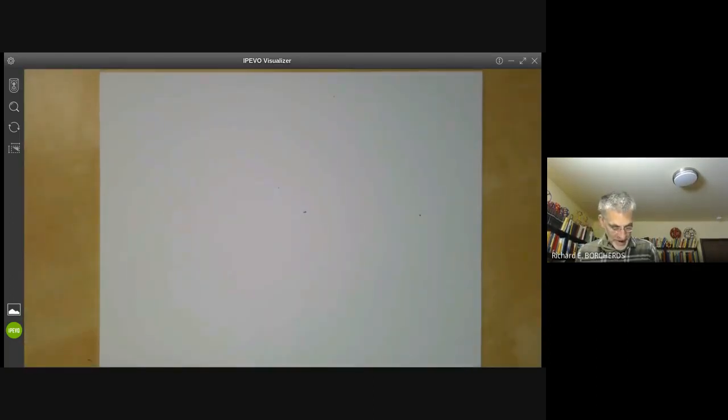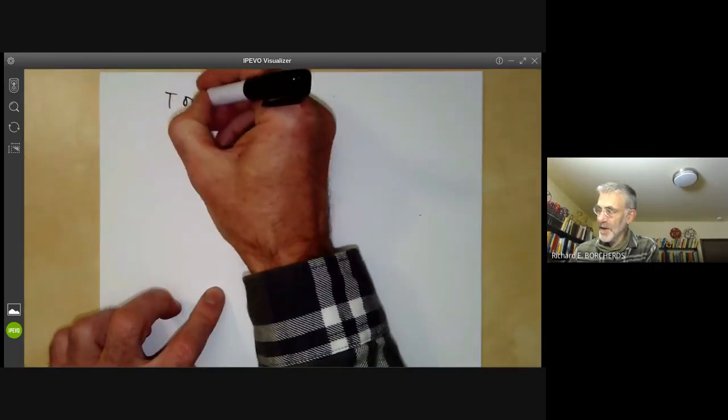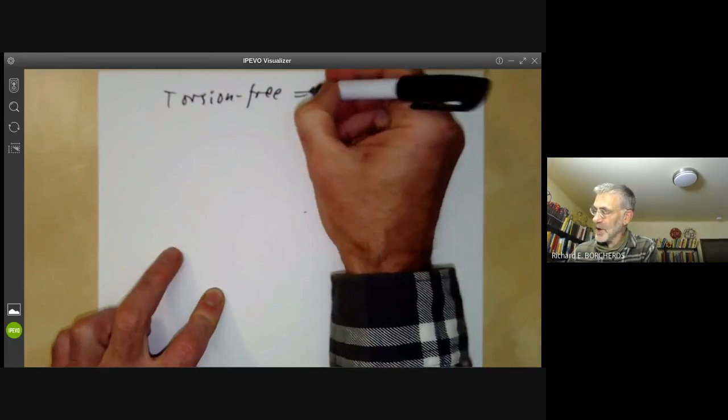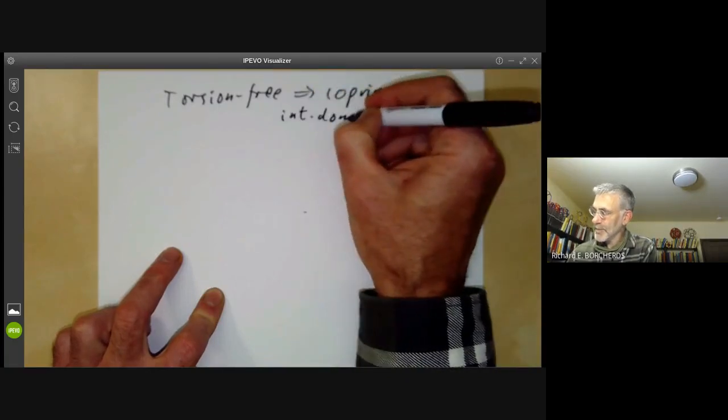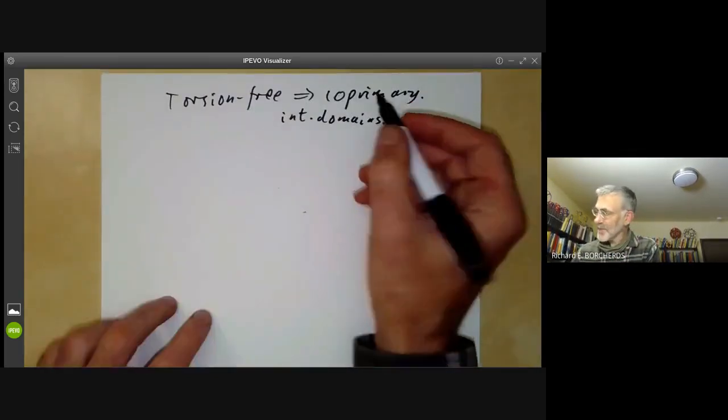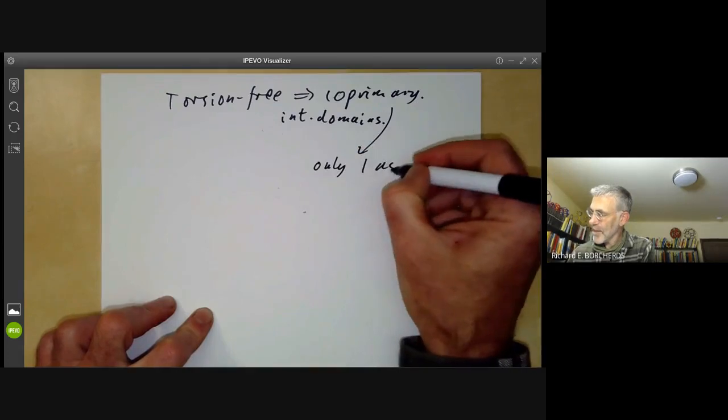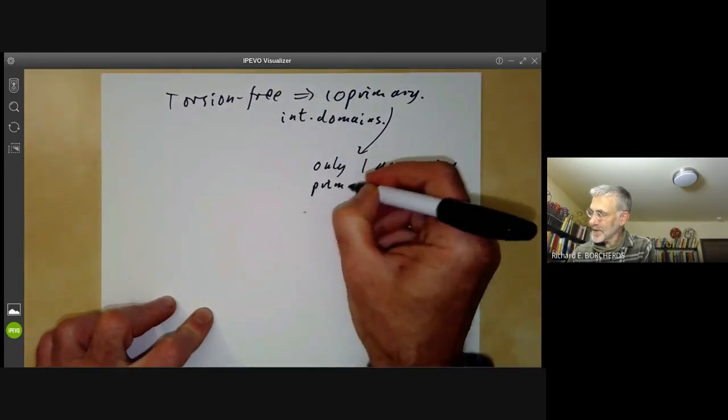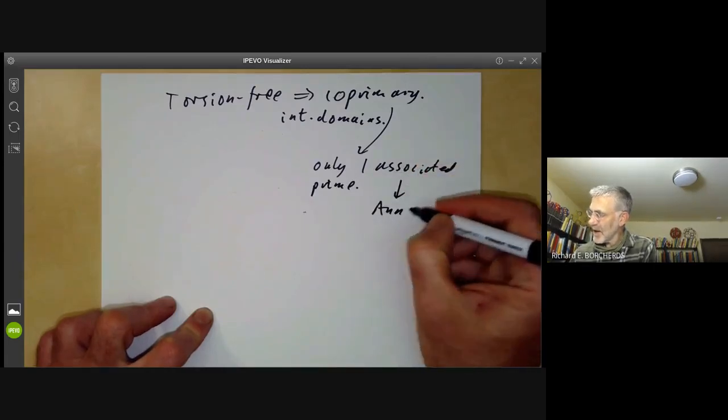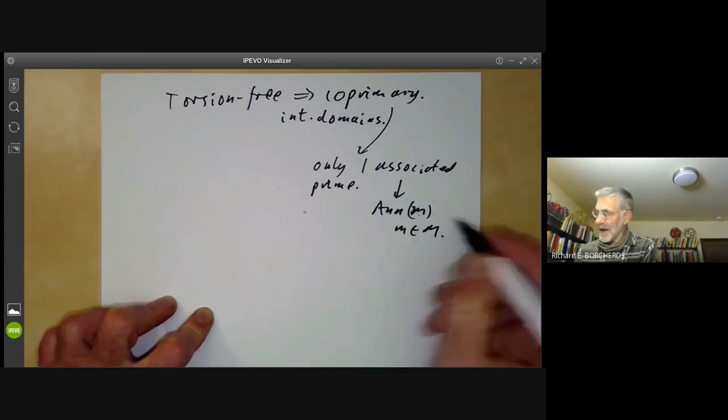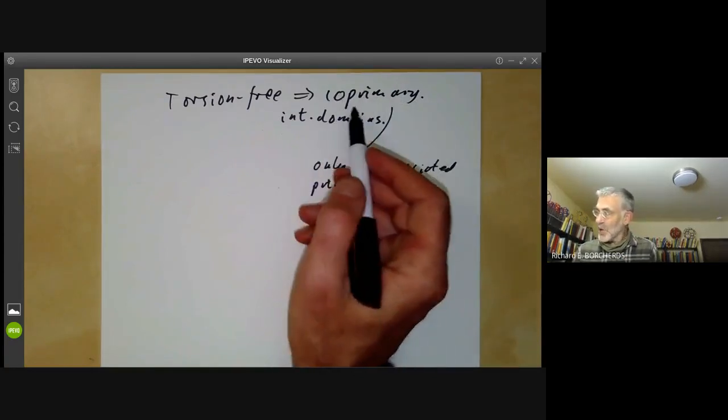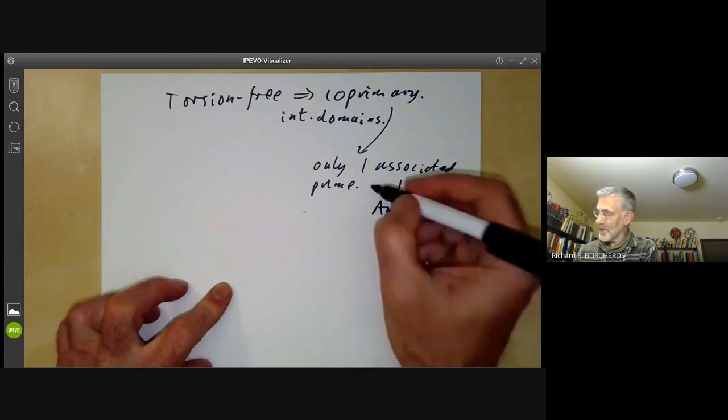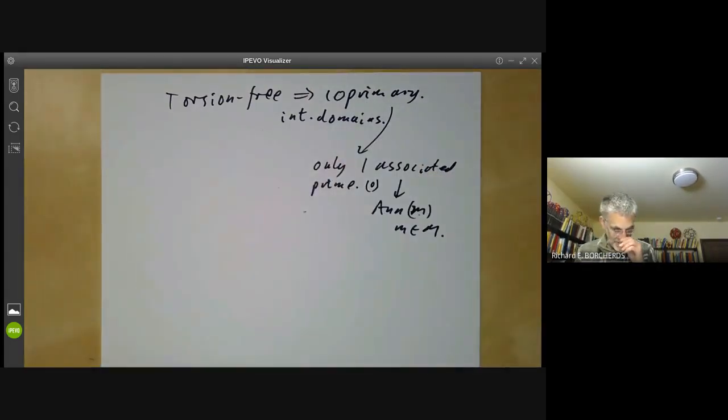I'll just finish off by commenting on the relation between torsion-free and co-primary, at least over integral domains. You recall that co-primary means that there's only one associated prime. An associated prime is a prime that's the annihilator of some element m in the module. If the module is torsion-free, then the annihilator of any non-zero element is always just zero. So the only associated prime is zero.